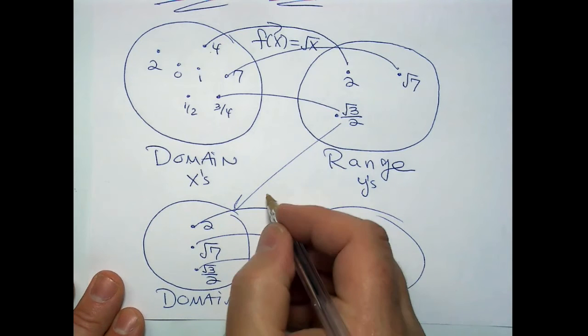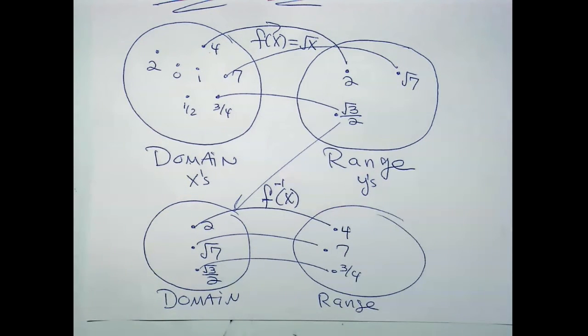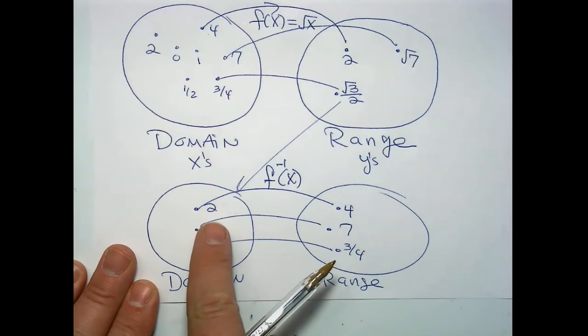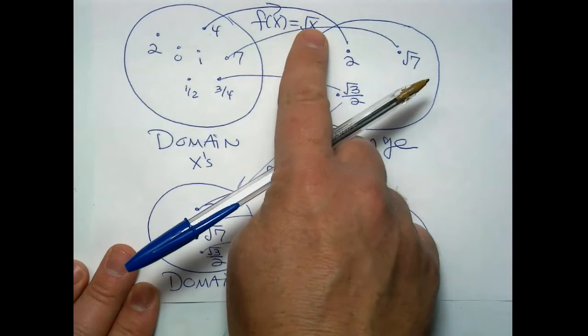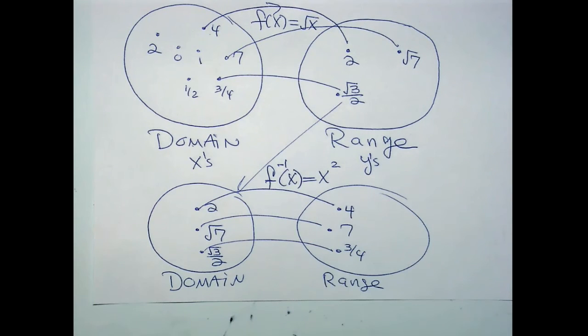So what is that inverse function? The first thing you notice is that with an inverse function, the domain and range get swapped — x's and y's get swapped. You'll see that a lot today: x's and y's have their roles reversed. I think you could certainly infer what this inverse function must be. It's the opposite of square root of x — it's got to be x².